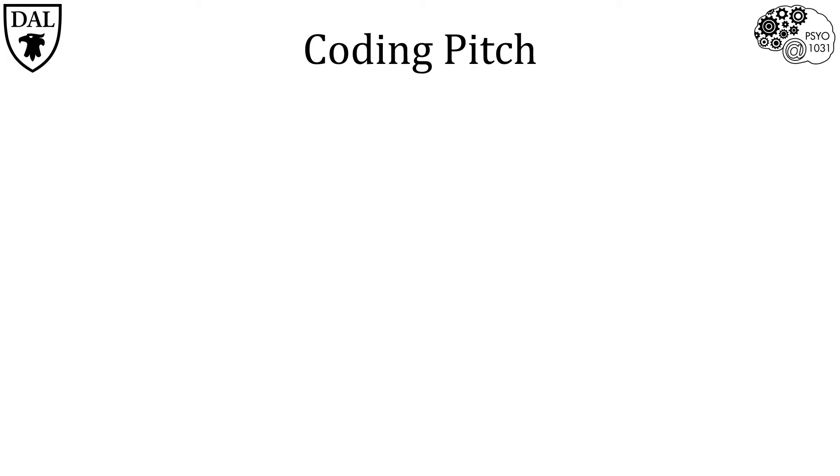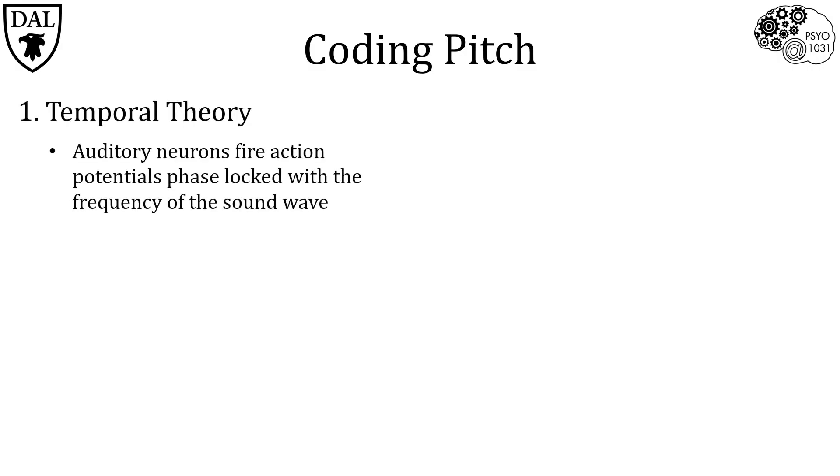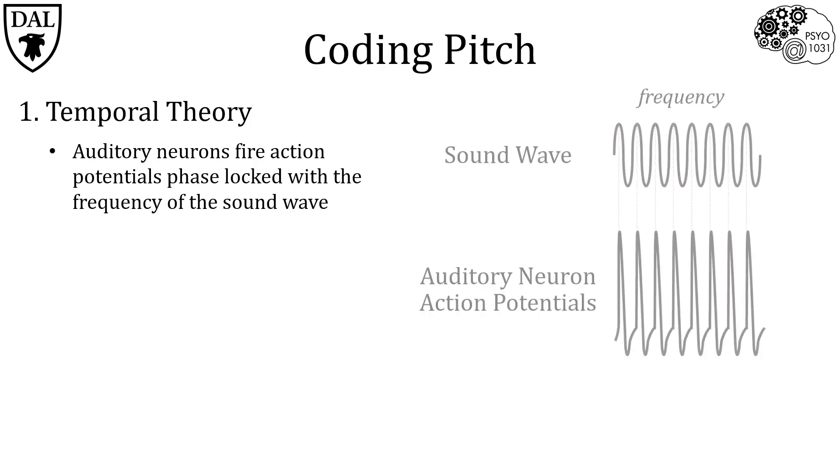The temporal theory and the place theory. First, the temporal theory states that hair cells bend at a rate proportionate to the sound wave frequency. And thus, auditory neurons will fire action potentials phase-locked with the frequency of the sound wave.